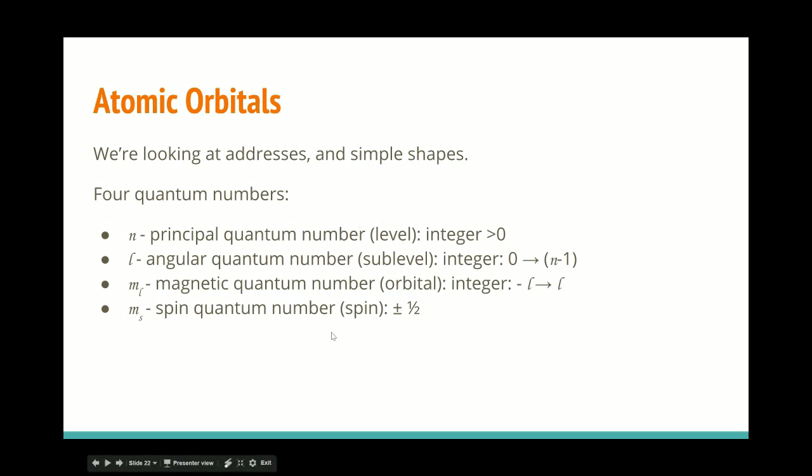Now, another way of naming these is level, sublevel, orbital, spin. I think that kind of flows off the tongue. Level, sublevel, orbital, spin. Level, sublevel, orbital, spin. Level, sublevel, orbital, spin. So it works fairly well to remember.